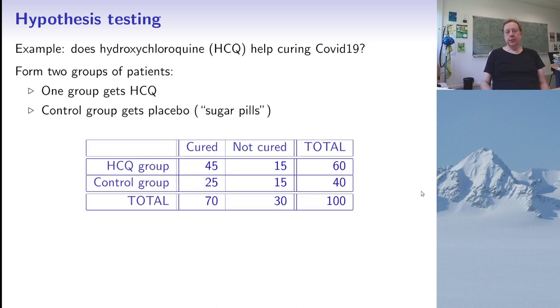Then you make a test with both groups and see how many people are cured or not in each group. Here are some figures I made up completely to give a simple example. If you look at these figures, the naive thing is to say in the HCQ group 75% of people are cured while in the control group only 62.5% are cured. So obviously the medicine has an effect because more people are cured in the HCQ group.